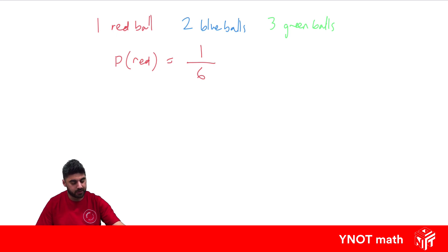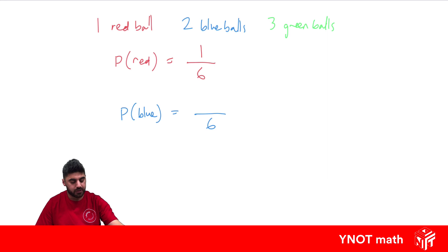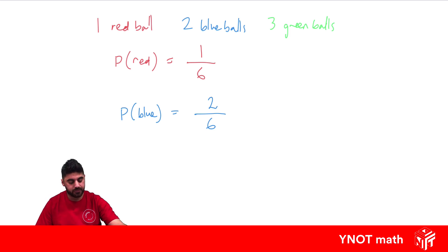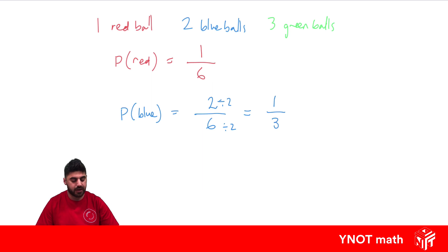What about the probability of getting a blue one? Again, the total number of ways is six because there are six balls, but two of them are blue. So we have a two out of six chance. When we deal with probability, we always have to give our fraction in simplest form. Both the numerator and denominator can be divided by two: two divided by two is one, six divided by two is three. So the chance of picking a blue ball is one out of three.